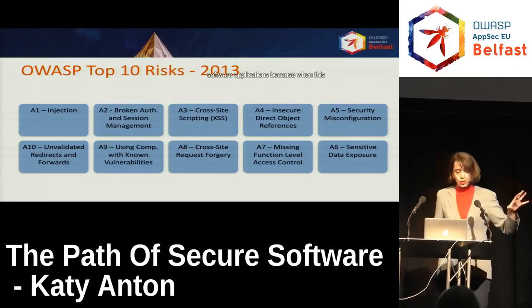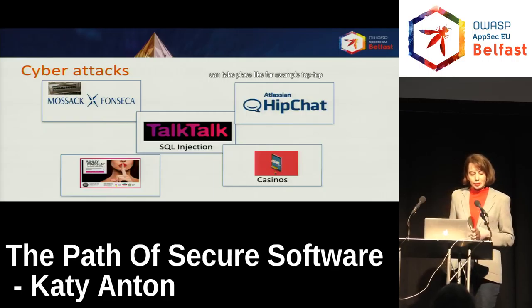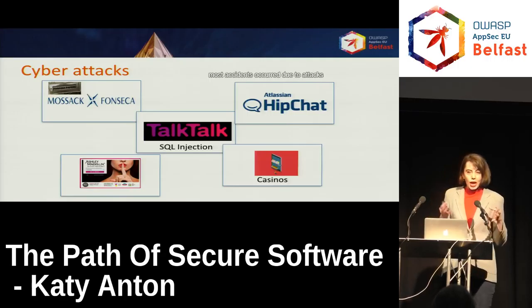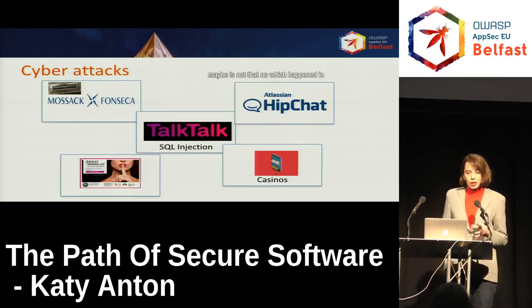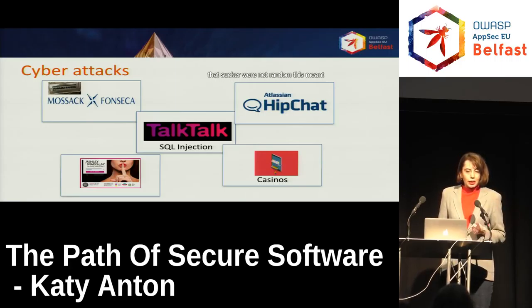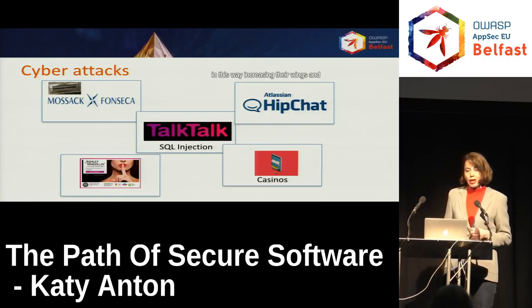The most common vulnerabilities are found in software applications, and here are some of the exploits that can take place: TalkTalk from an SQL injection, Ashley Madison — a lot of material there — Mossack Fonseca, the TunePatch software. A very interesting one involved software powering slot machines in US casinos, where the numbers generated were not random. This meant attackers could guess them — they loaded a sequence of numbers, analyzed them, and predicted the next ones, increasing their wins.